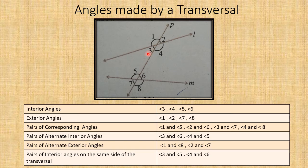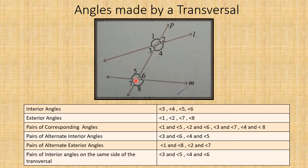When we take the angles in pairs, the first type is interior angles. Interior means inside. In the figure, the inside region is the area between line L and line M. The angles coming in this inside area are angle three, angle four, angle five, and angle six. They are in the inside part, so they are called interior angles.